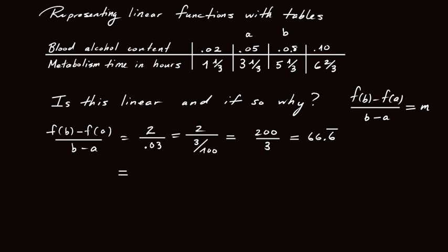Okay, so in that case, well, the f of b minus f of a is the change in the values of the metabolism time. So it's 5 and 1 third minus 3 and 1 third, which is again 2. So the change in the y values is still 2. And the change in the x values, 0.08 minus 0.05, is still 0.03.